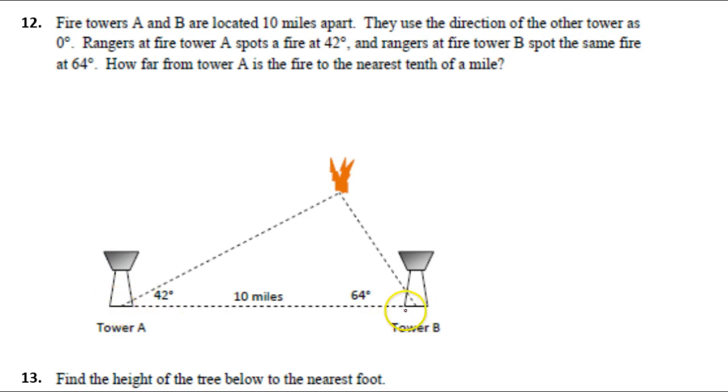Tower B is 0 degrees from tower A. They're on the same line. Rangers at fire tower A spot a fire at 42 degrees, as shown here. And rangers at fire tower B spot the same fire at 64 degrees, as shown right here. Now, how far from tower A is the fire?